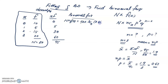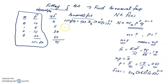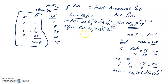The binomial frequencies are calculated as: 50 × 3C0 · (0.63)^0 · (0.37)^3, then 50 × 3C1 · (0.63)^1 · (0.37)^2, then 50 × 3C2 · (0.63)^2 · (0.37)^1, and finally 50 × 3C3 · (0.63)^3 · (0.37)^0 — completing the fitting of the binomial distribution.